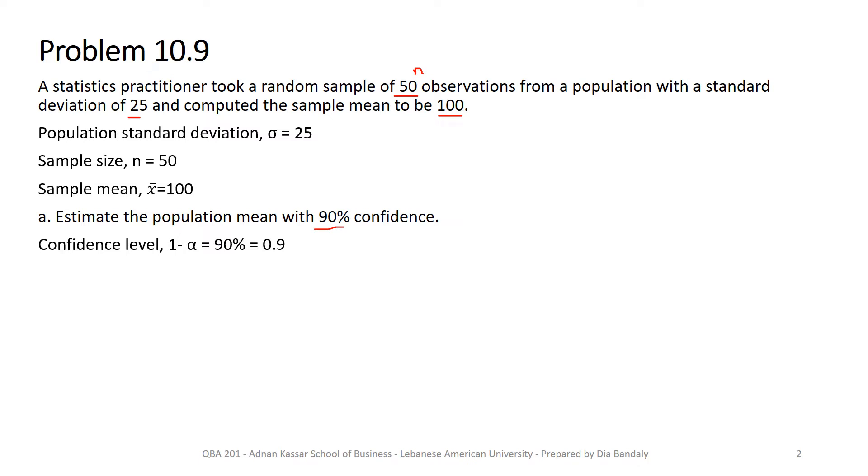And we know that to build the confidence interval, we can follow the following formula where we have x-bar plus or minus z alpha over 2 times sigma over square root of n. We know sigma, we know n, and we need to figure out what's that z alpha over 2.